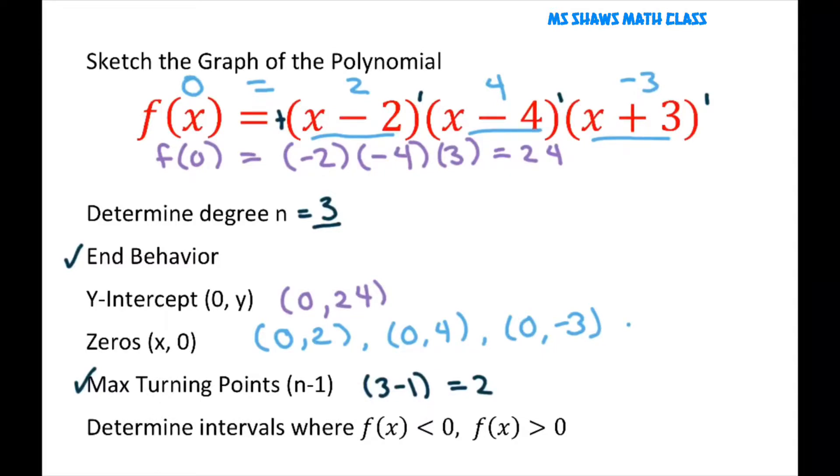That means when we go through the x-intercepts, it's going to cross. And we'll determine intervals where y is negative and positive after we graph.